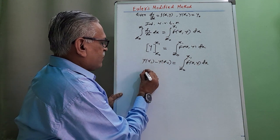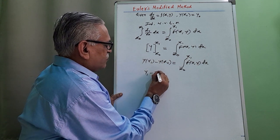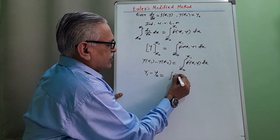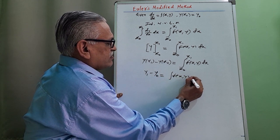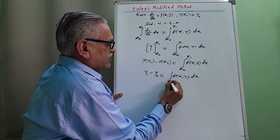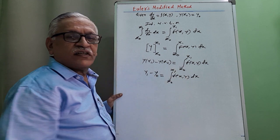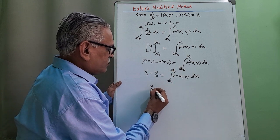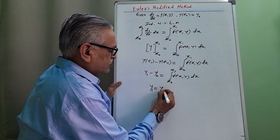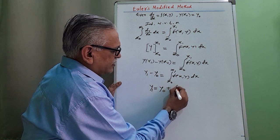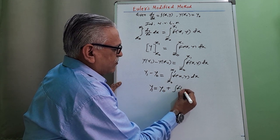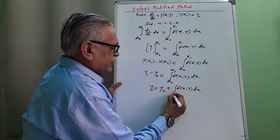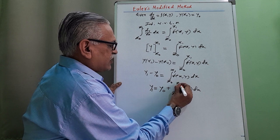y(x₁) is y₁, so y₁ minus y₀ equals the integral of f(x, y) with respect to x between x₀ and x₁. Transforming to the right-hand side, we get y₁ equals y₀ plus the integral of f(x, y) from x₀ to x₁.